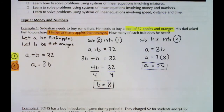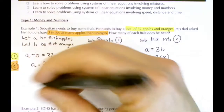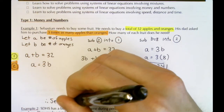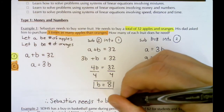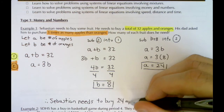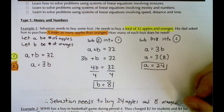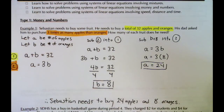In this example we don't write the solution as a coordinate point — that wouldn't make sense. Instead, answer the question in words. Therefore, Sebastian needs to buy 24 apples and eight oranges. Word problem, word answer.